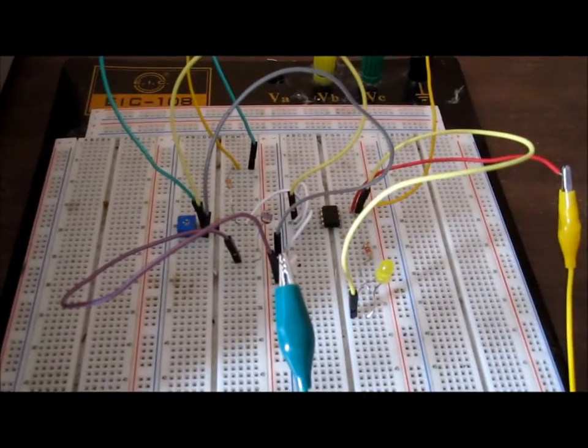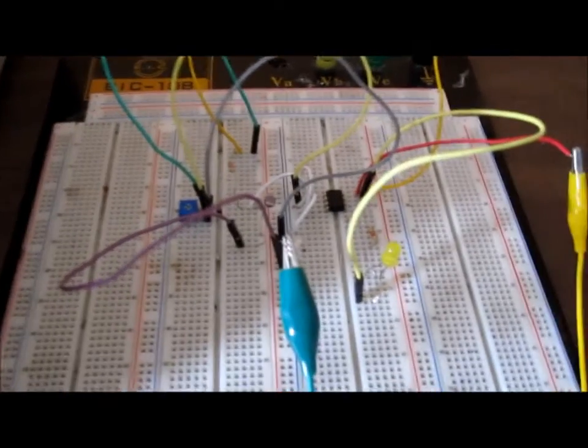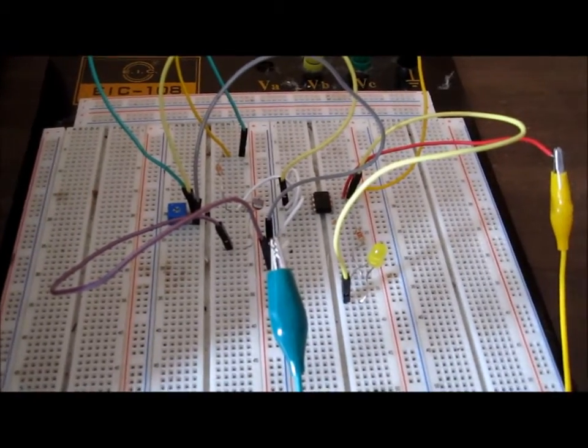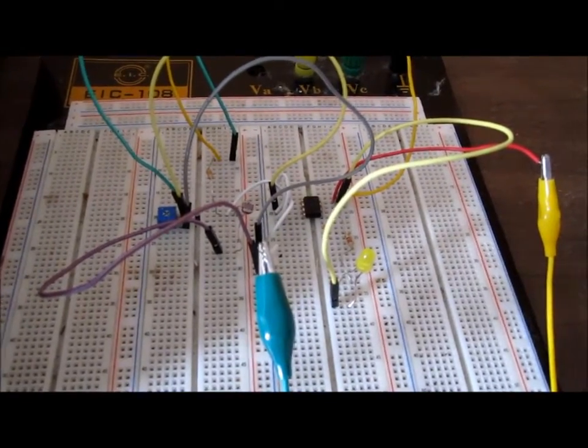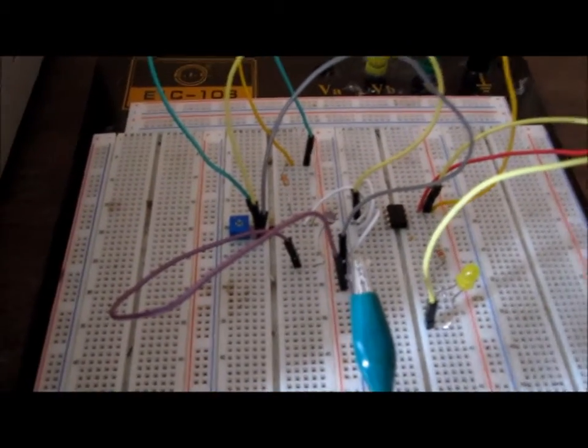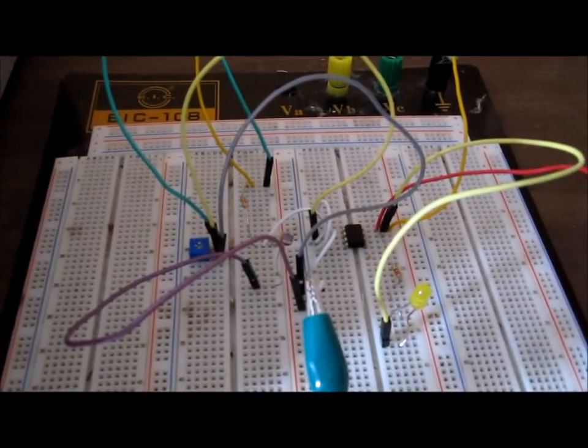The LM311 functions as a voltage comparator, so it compares voltages at the inverted input and the non-inverting input. When voltage is greater at the inverted input, then the output turns on. We have a potentiometer connected to the non-inverting input.